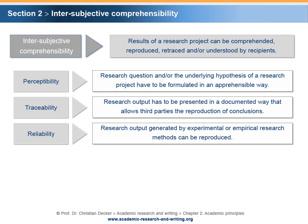Reliability: the aspect of reliability is closely linked to traceability. However, it addresses a specific aspect of research. Reliability means that the research output generated by experimental or empirical research methods can be reproduced. There are two dimensions. First, the researcher should be able to reproduce their own research output. Second, other researchers should be able to reproduce the research output as well.